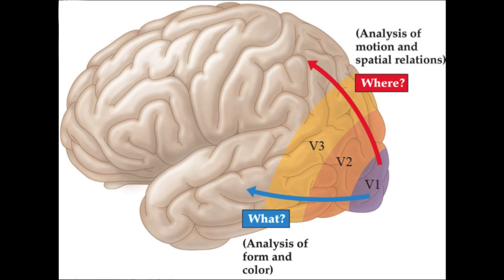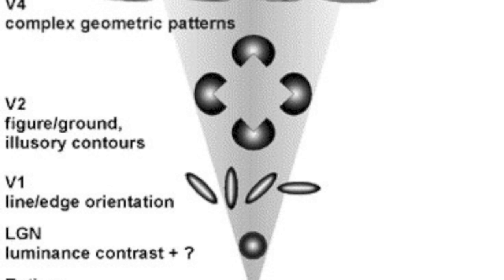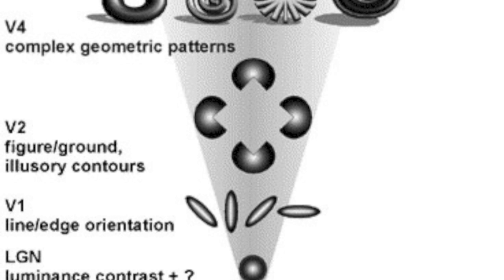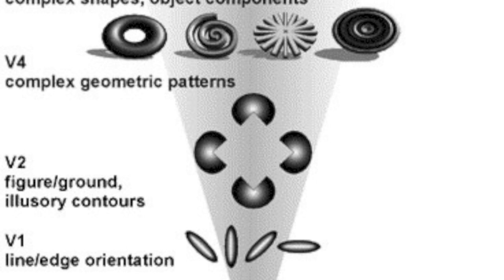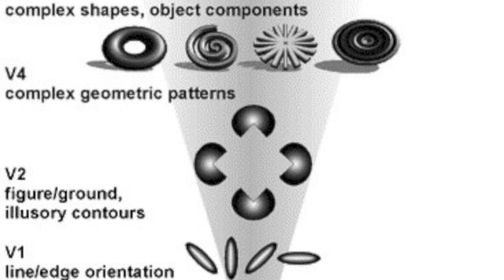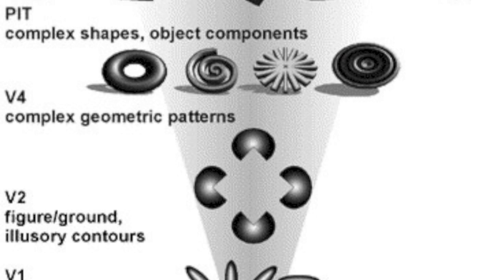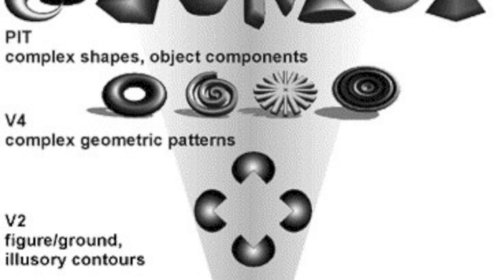V1 projects onto V2, which projects onto V3. V1, V2, and V3 detect more and more complex patterns — from simple edges in V1 to longer lines, illusory edges, junctions where edges meet, and more in V2 and V3.